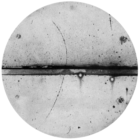PET scanners create detailed three-dimensional images of metabolic activity within the human body. An experimental tool called positron annihilation spectroscopy is used in materials research to detect variations in density, defects, displacements, or even voids within a solid material.